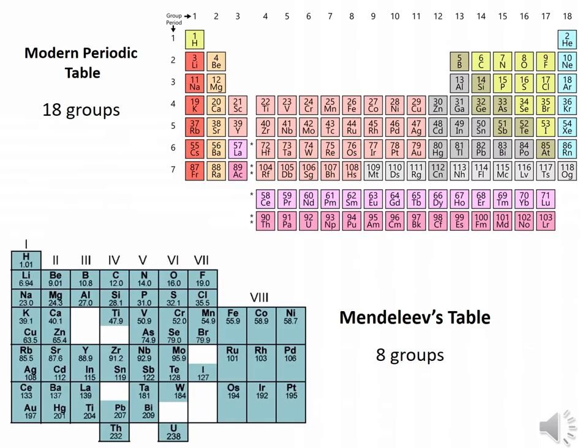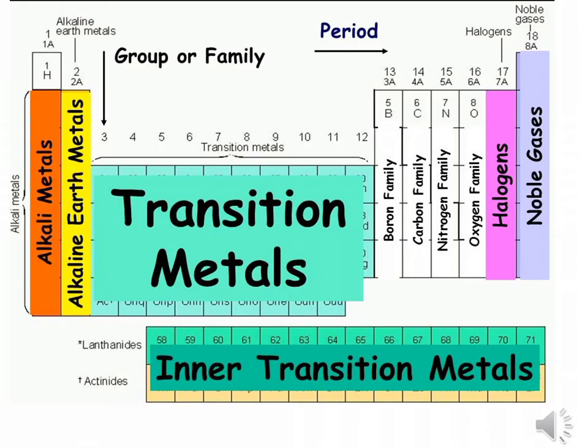However, the modern periodic table has many more groups with 18, compared with just 8 in Mendeleev's table. Groups identify the principal families of elements, and each group has special names.